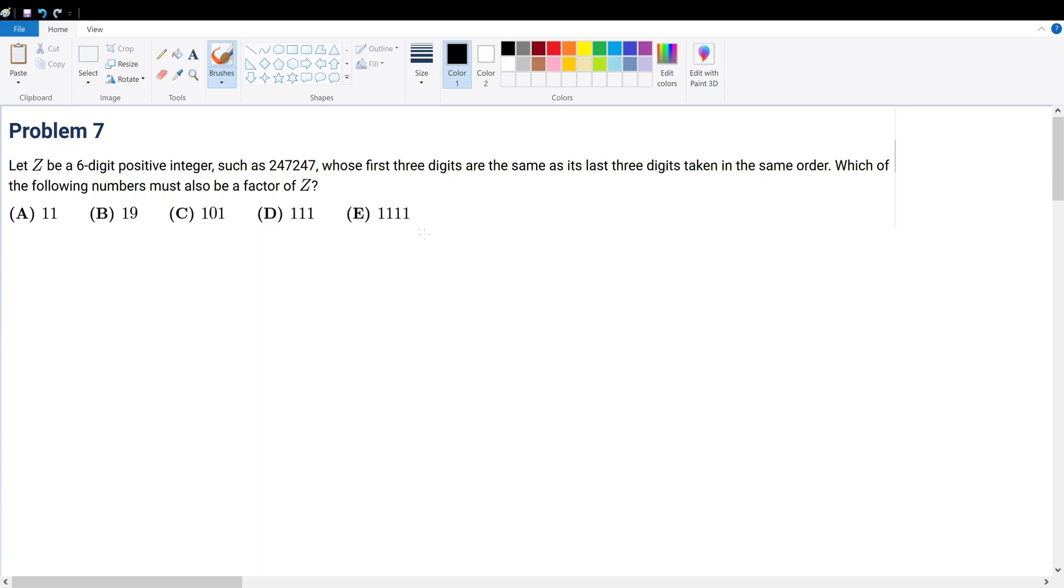Okay, so I see what they mean. Let's give ourselves a very simple example of what Z could be. Z is basically where you have a six-digit number: A, B, C, A, B, C, where the three digits are the same as its last three digits taken in the same order.